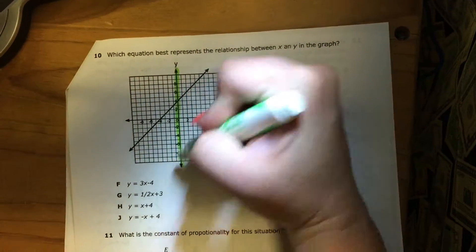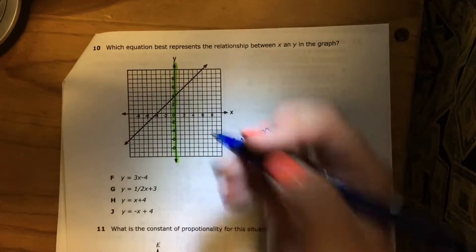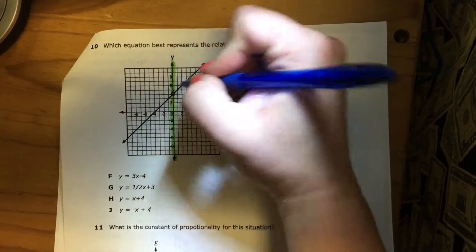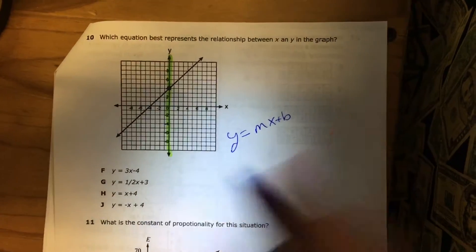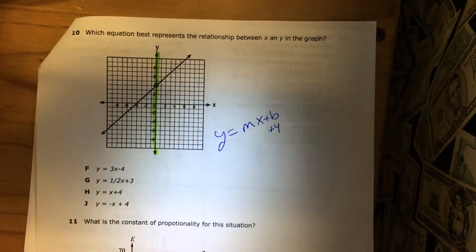Here's my y-axis. On my y-axis, my line crosses at 4. Okay, so my y-intercept where I begin is going to say plus 4.